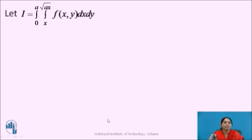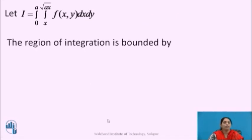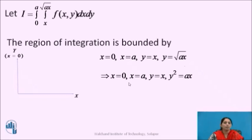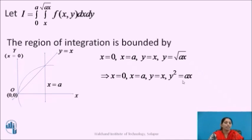Now let us assign the given integral as I. We will find the region of integration, which is bounded by the curves x equals to 0, x equals to A, y equals to x, and y equals to root(Ax). These equations can be rewritten as x equal to 0, x equals to A, y equal to x, and y square equals to AX (squaring the last equation). We will draw the graph: the x-axis, the y-axis, the line x equals to A parallel to the y-axis, the line y equals to x through the origin, and the parabola y square equals to AX.